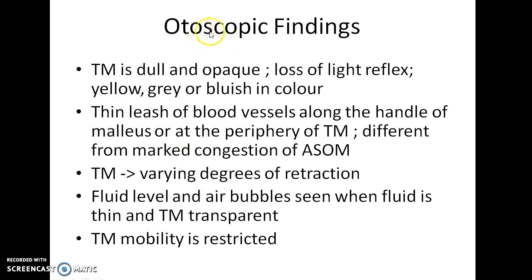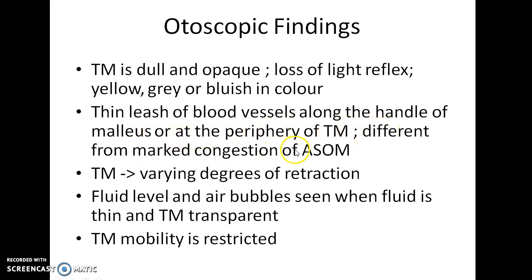The otoscopic findings in serous otitis media: the tympanic membrane is dull and opaque, with loss of light reflex — that is, you cannot see the cone of light when you shine a torch. The tympanic membrane will be yellow, gray, or blue-ocean colored. A thin leash of blood vessels along the handle of malleus or at the periphery of the tympanic membrane is seen, which is different from the marked congestion seen in acute suppurative otitis media.